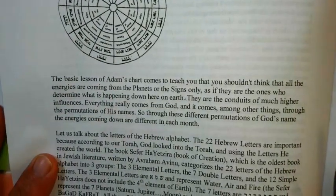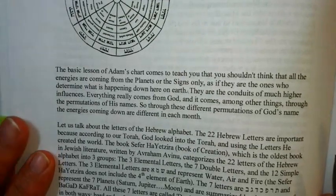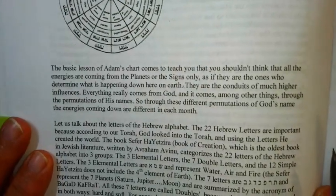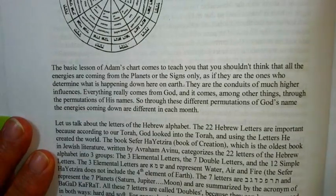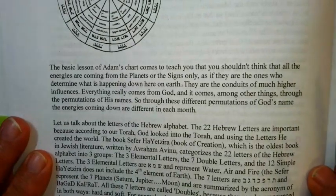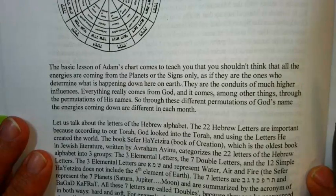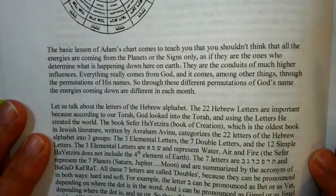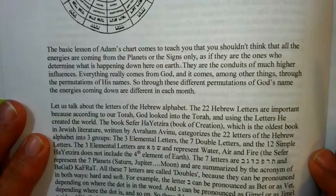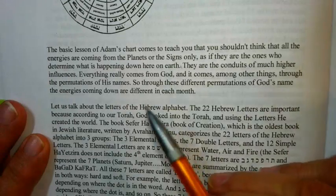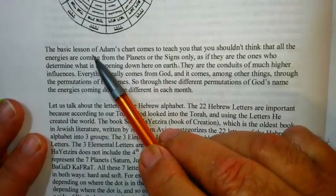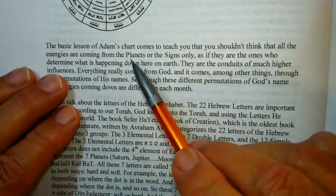The Chacham is going to start talking about the Yetzirah. This is probably the most ancient of all Kabbalistic works — it goes back nearly 4,000 years and was created by Abraham Avinu. It's really telling the story of how all of these wheels work. Let's talk about the basic lesson of Adam's chart.